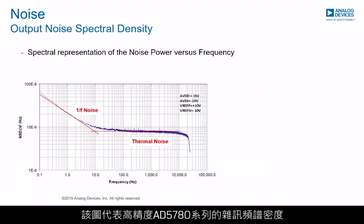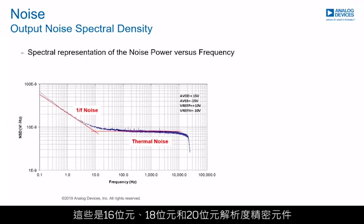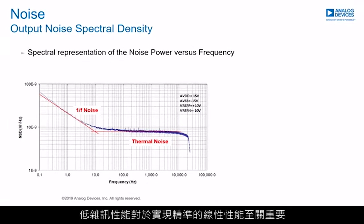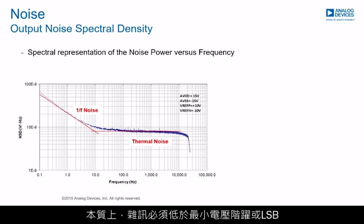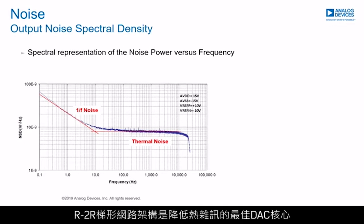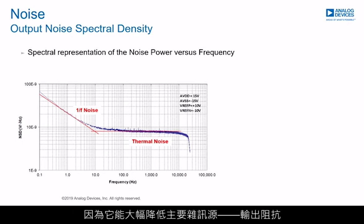The plot represents the noise spectral density for the high-precision AD5780 family — a family of 16, 18, and 20-bit resolution precision devices where low noise performance is key to achieving accurate linear performance. Essentially, the noise has to be lower than the minimum voltage step, or LSB. The AD5780 family is based on an R2R core. The R2R ladder network architecture is the optimum DAC core for reducing thermal noise, as it minimizes the output impedance, which is the dominating noise contributor.